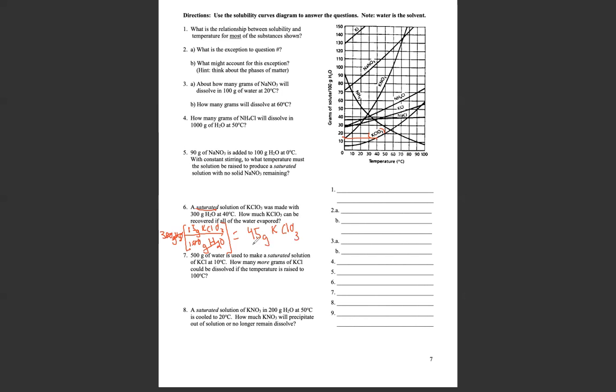And that is the amount that is dissolved at this temperature. So if we were to evaporate all of the water, this is how much we'd be left with. So six is 45 grams of potassium chlorate. So let's look at number seven.